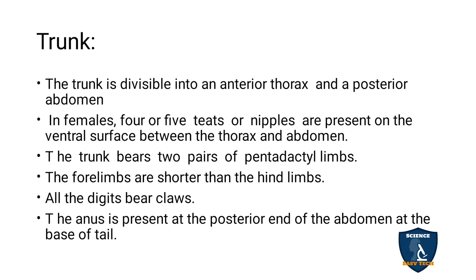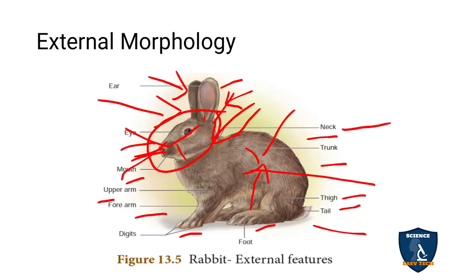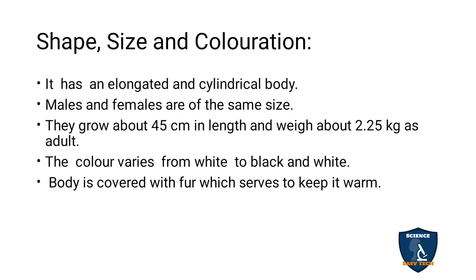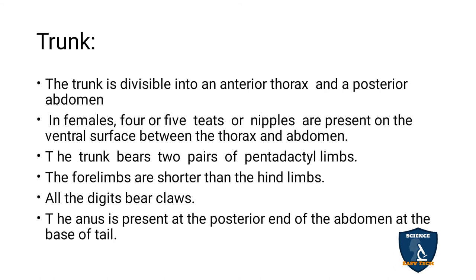In females, four or five teats or nipples are present on the ventral surface between the thorax and the abdomen. These are present only in females, not in males, and are used to feed the young ones.